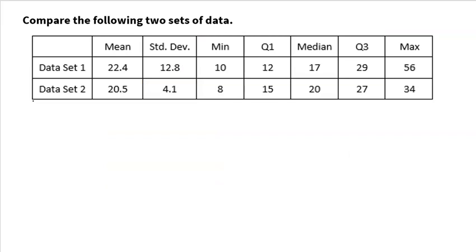Let's look at one more example. This is a very typical type of thing the AP test does — they give you two sets of data with summary statistics and want you to answer questions. Looking at shape first: in data set one, the median is much smaller than the mean, whereas in data set two they're pretty close to the same. So data set two is probably fairly symmetric, whereas in data set one, having the mean higher than the median means it's probably skewed to the right.